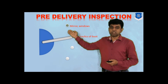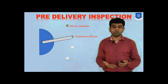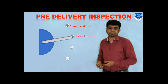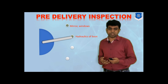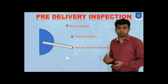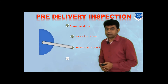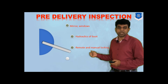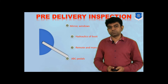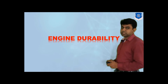Other aspects checked during PDI include mirrors and windows, hydraulics of the boot — since many cars now have hydraulic boot doors and leakages or malfunctions must be verified — remote and manual locking conditions, as most cars have both a remote key and a normal key. Finally, the ABC pedals — accelerator, brake, and clutch — and their conditions are also monitored by the dealer.